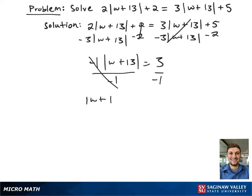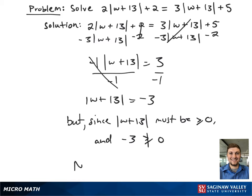This gives the absolute value of w plus 13 equals negative 3. However, since the absolute value of w plus 13 must be greater than or equal to 0, since it's an absolute value, and negative 3 is not greater than or equal to 0, we have no solution.